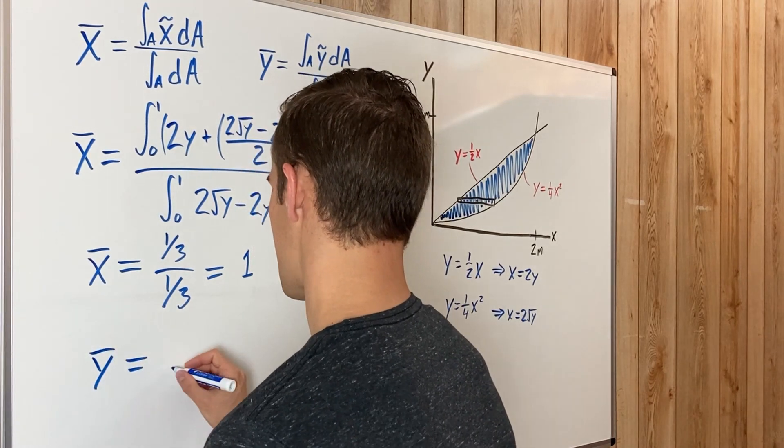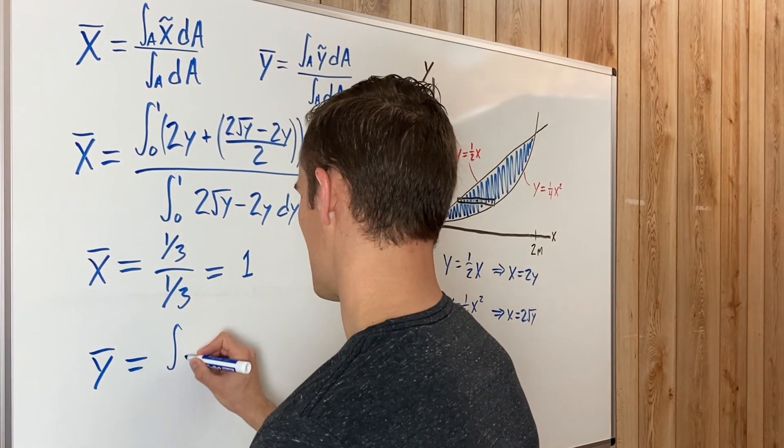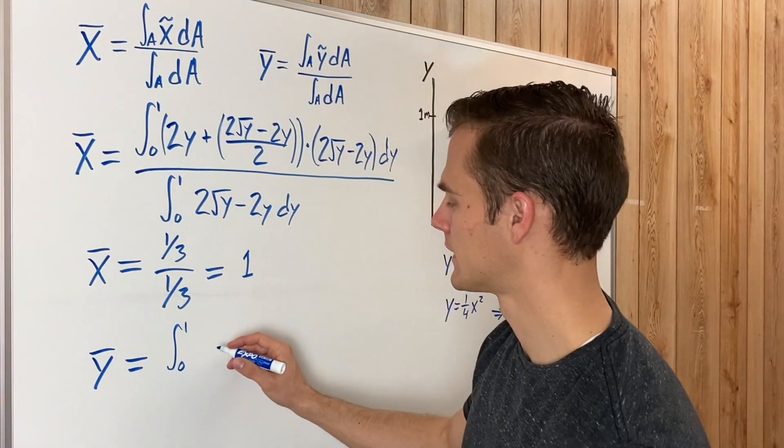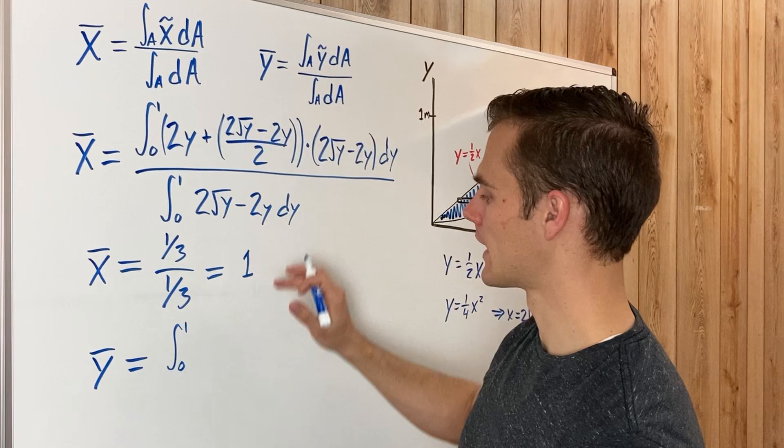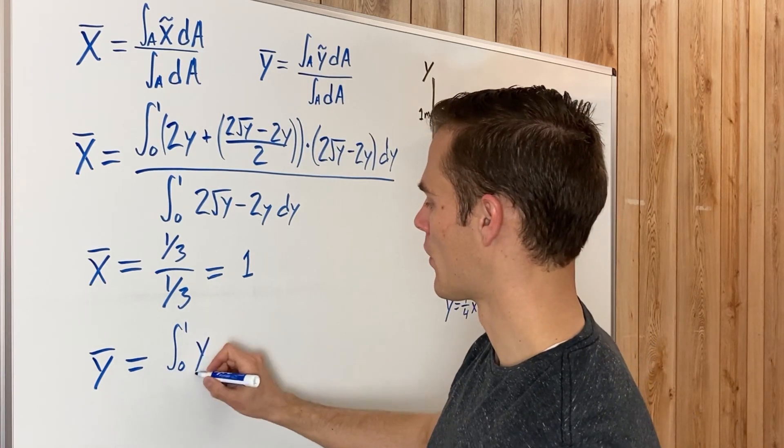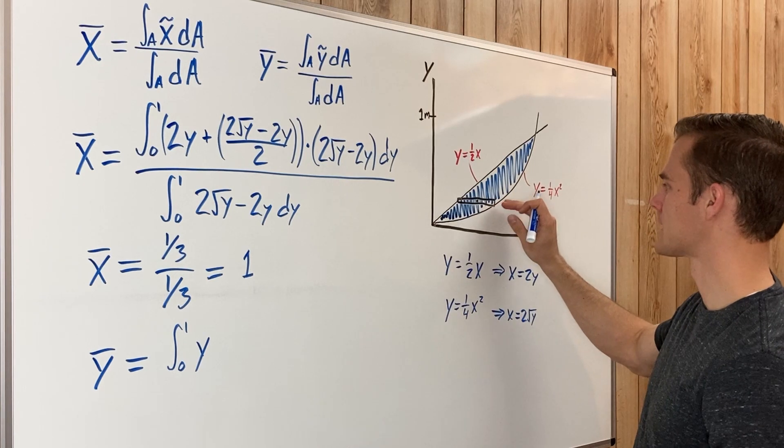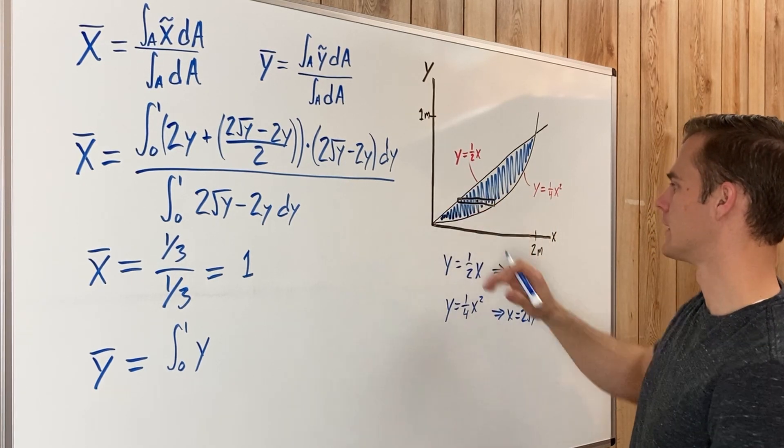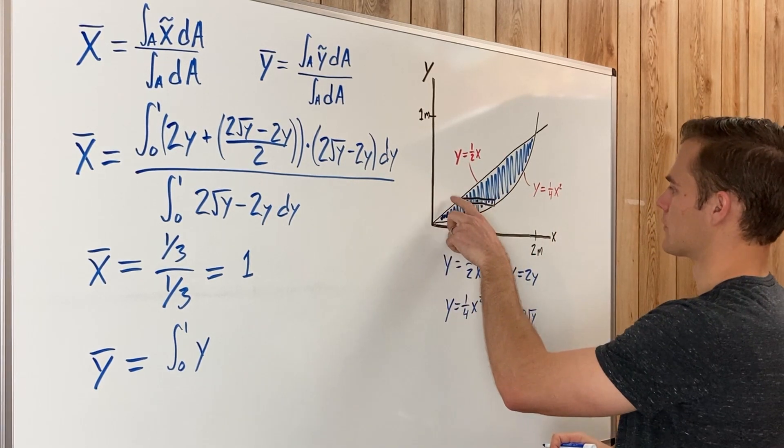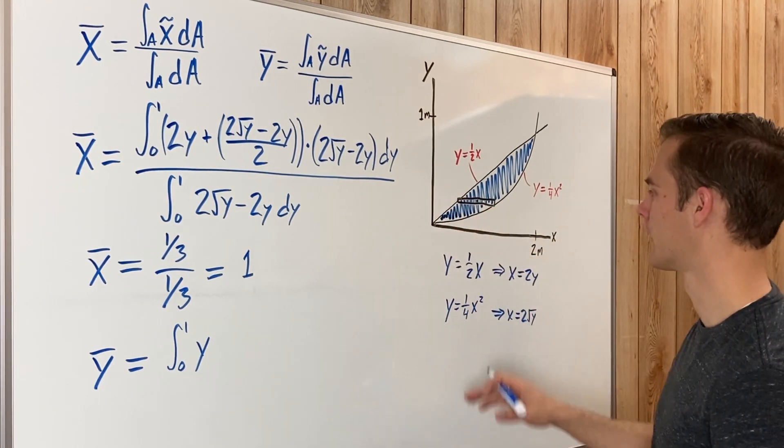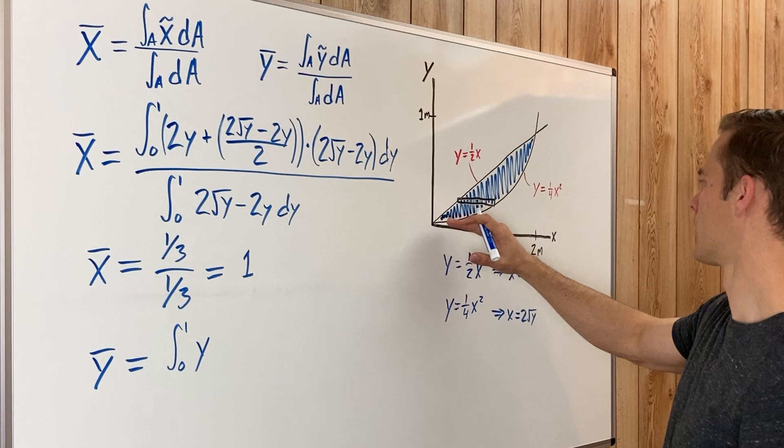We're going to have the integral again from zero to one. We're still integrating with respect to Y. Y tilde this time is just going to be Y, because the Y center of mass is just going to be in the middle of this, which, since it's just a differential slice, it's just going to be Y. It's just going to be wherever on this function we are integrating.